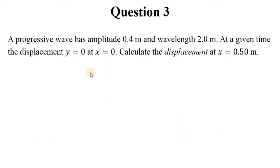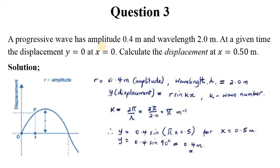Question 3. A progressive wave has an amplitude of 0.4 meters and wavelength 2.0 meters. At a given time, the displacement y equals 0 at x equal to 0. Calculate the displacement at x equals 0.50 meters. We are trying to talk about a sinusoid or a wave pattern that is described by a sine transform. So trying to solve this, we are talking about displacement. This y and r is the amplitude. There's this value x in the horizontal axis and you can see the pattern the wave is tracing.